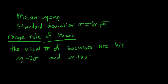This number here is called the minimum usual value. And this one here, this is called the maximum usual value.